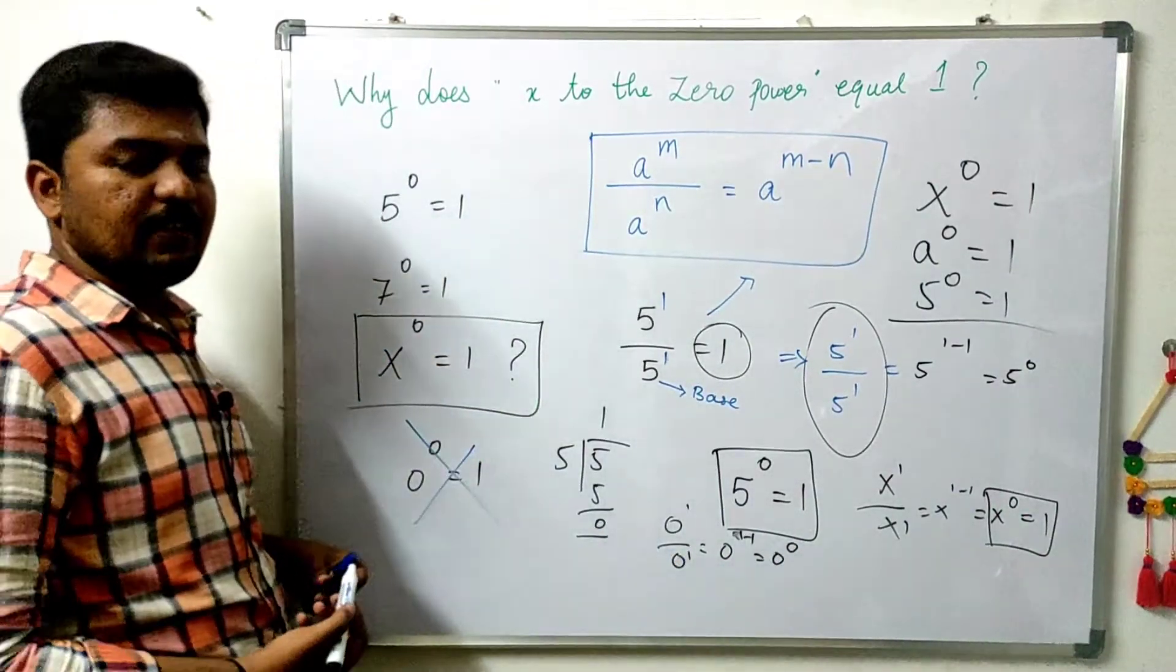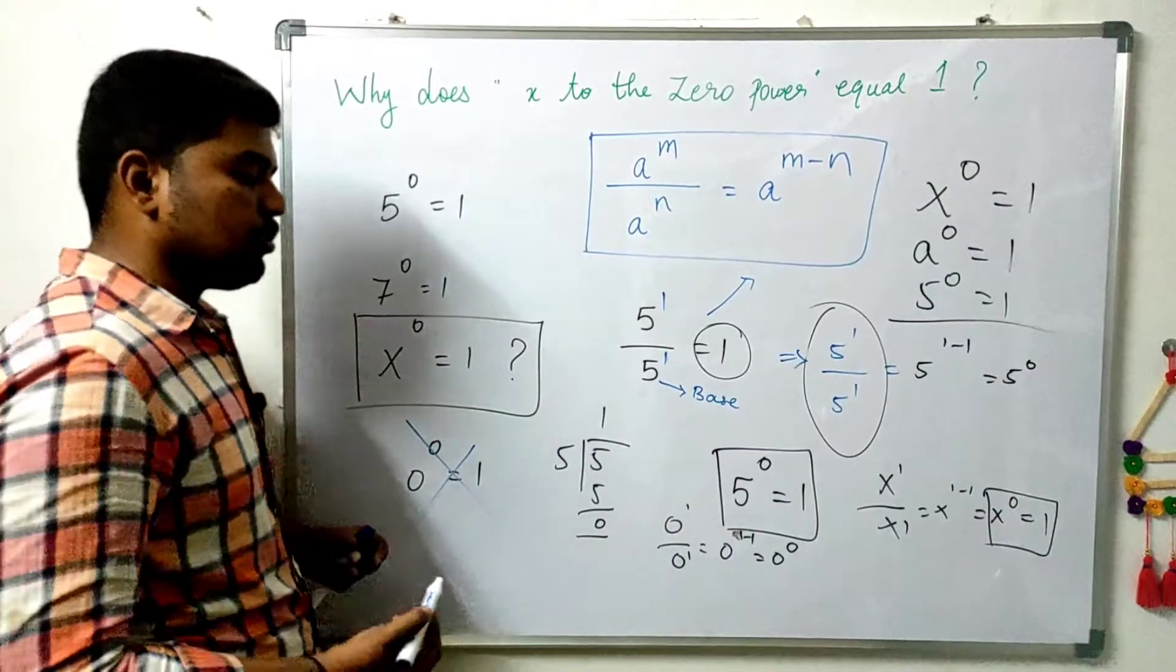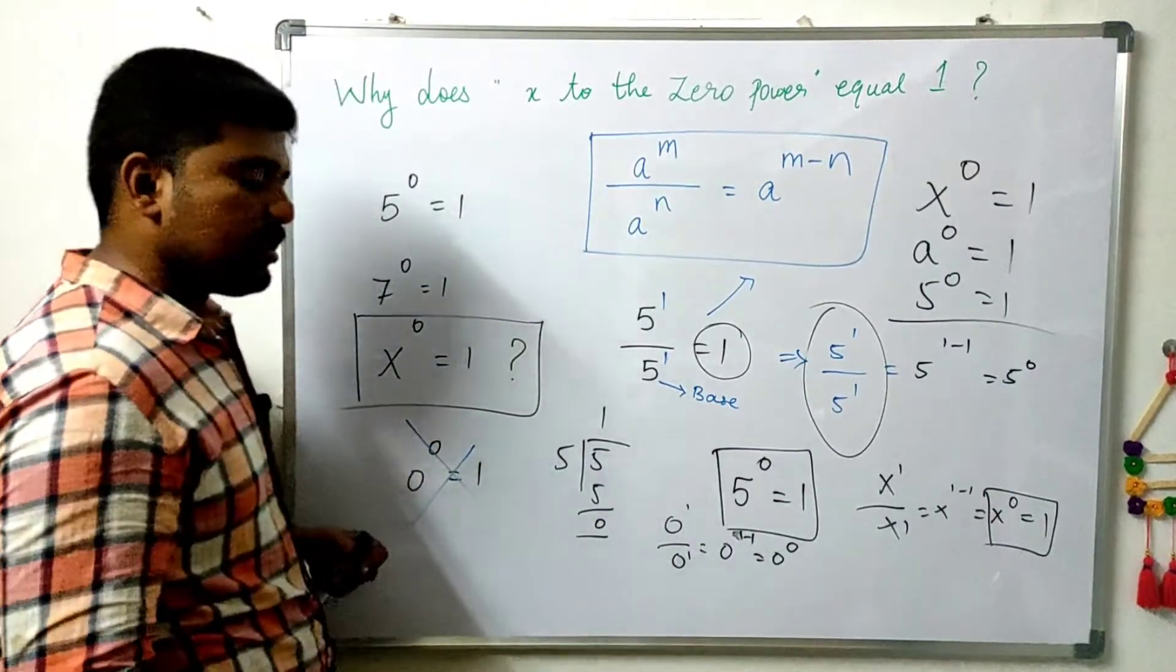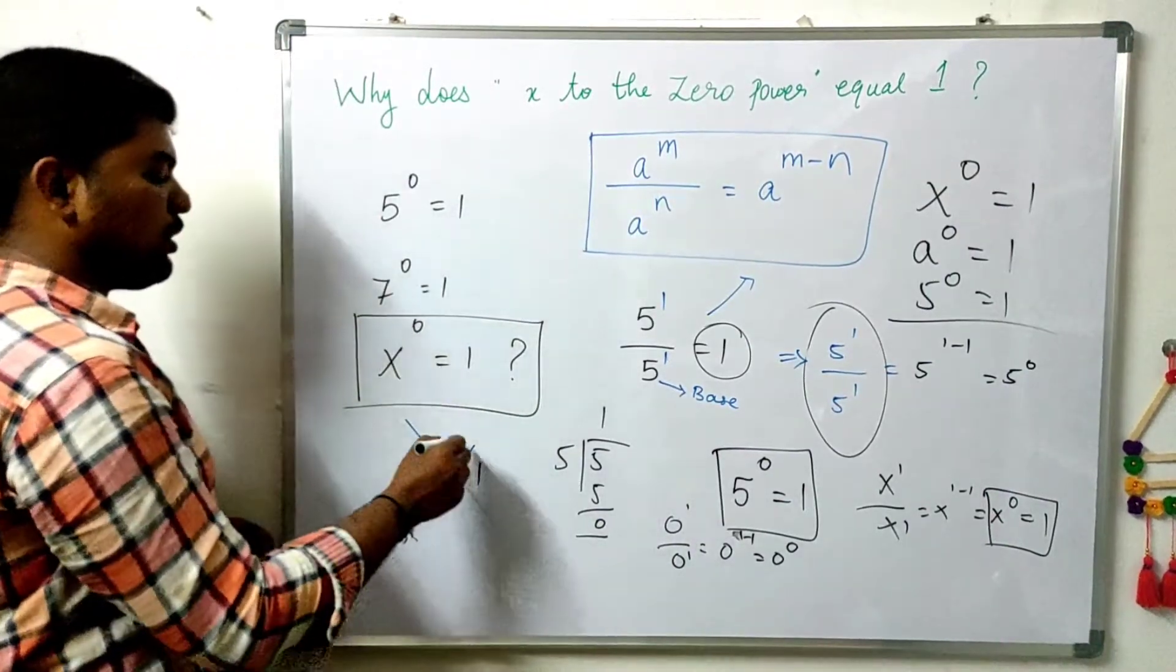0 by 0 is not defined, or an undefined form. So 0 divided by 0 is not equal to 1.